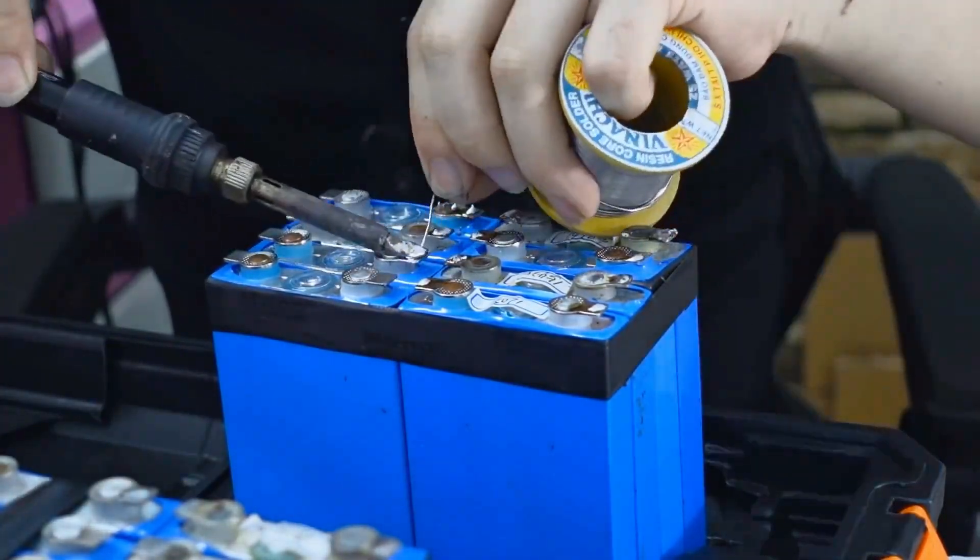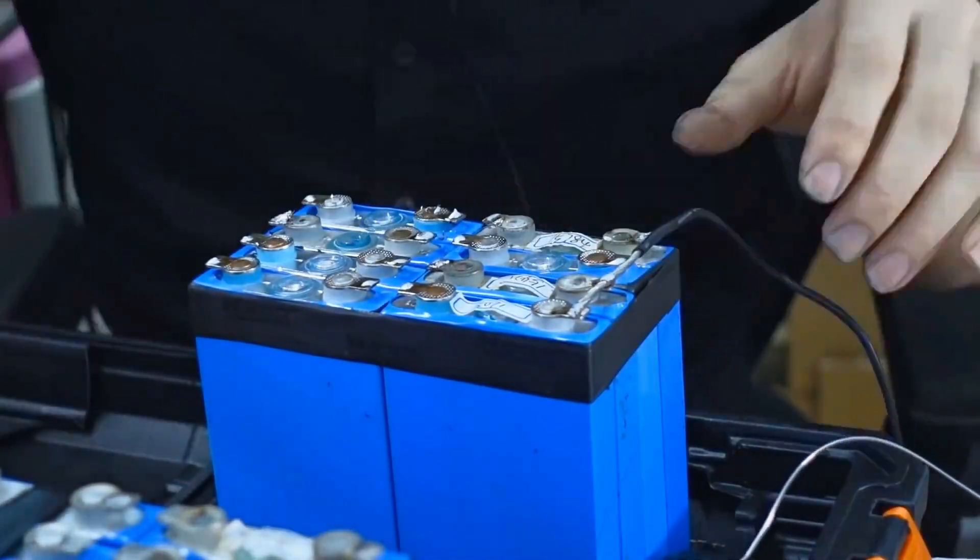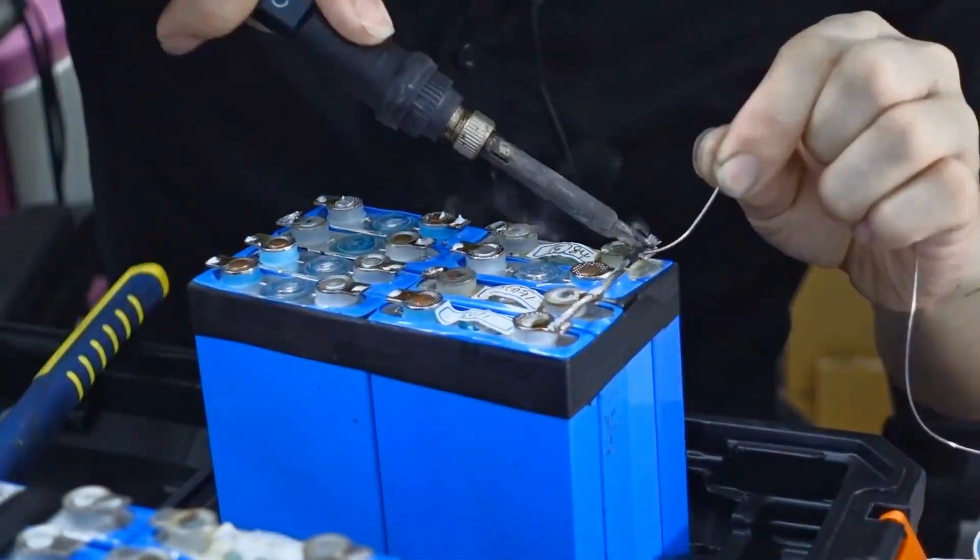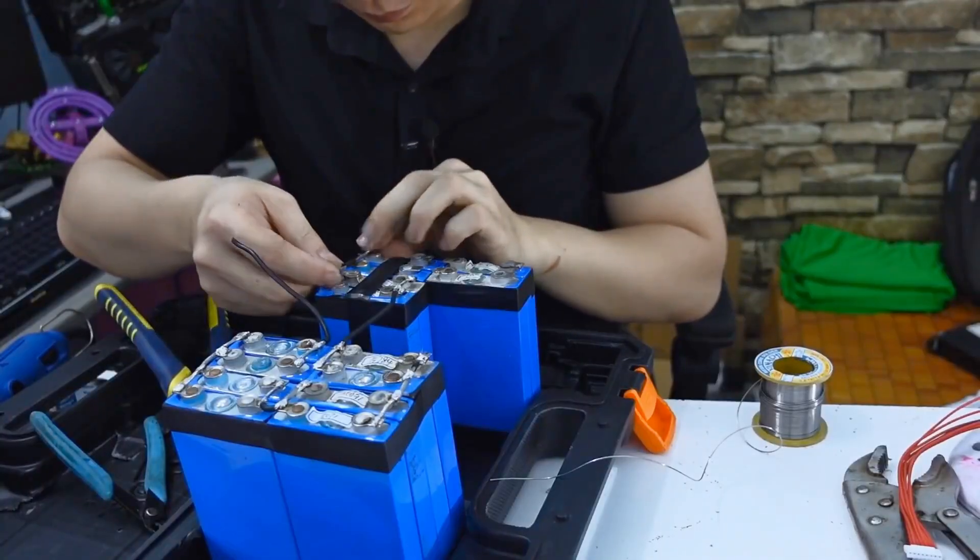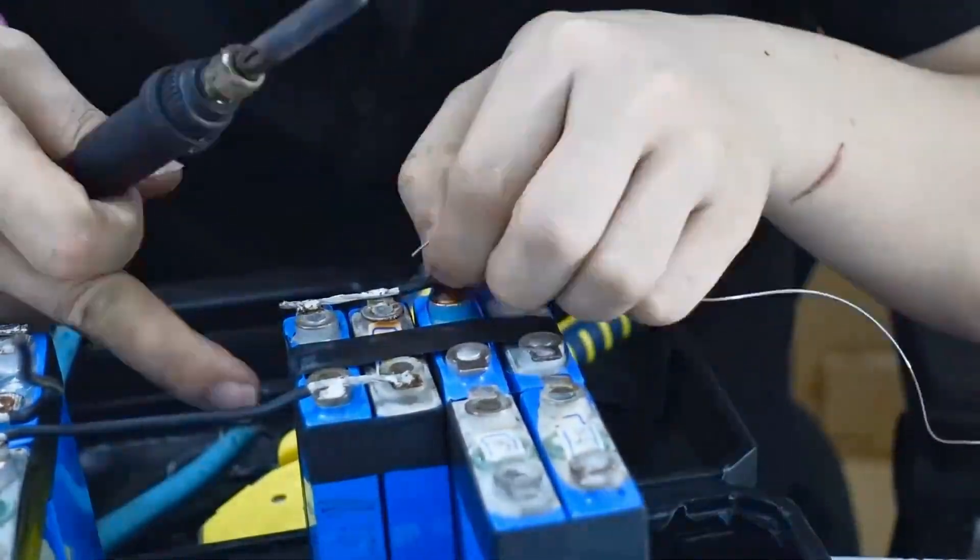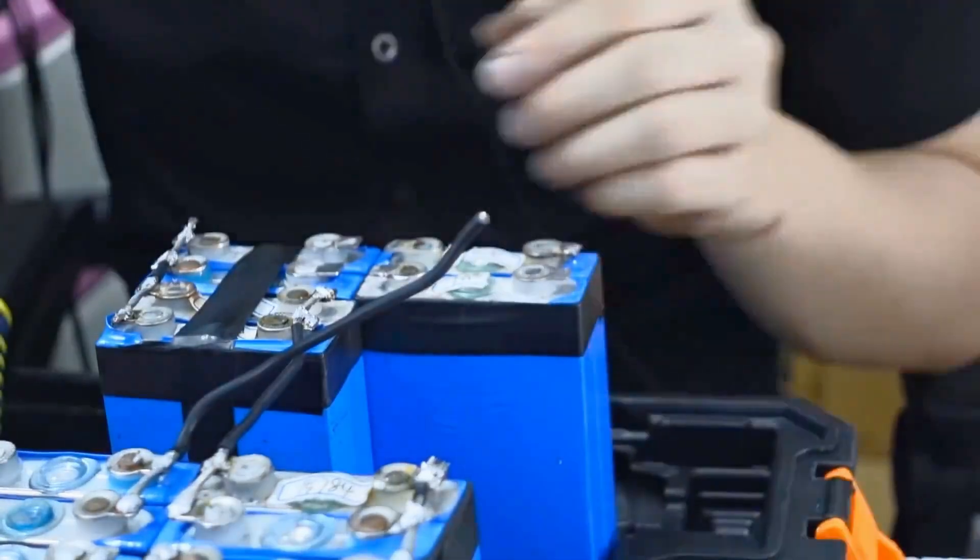Cell selection and voltage matching. Test each cell's voltage with a multimeter. Ensure all cells are within 0.05V (for example, 3.65V to 3.70V). Reject damaged or puffy cells. They risk thermal runaway.